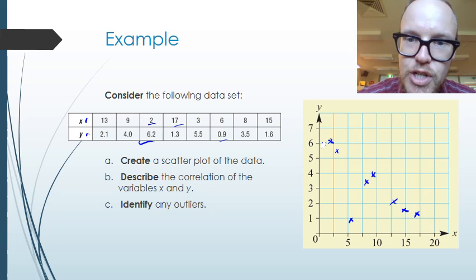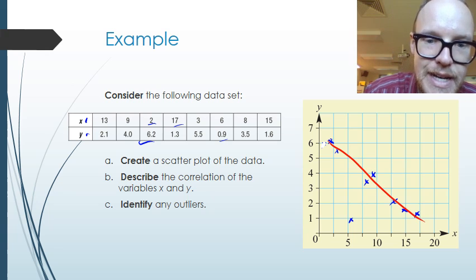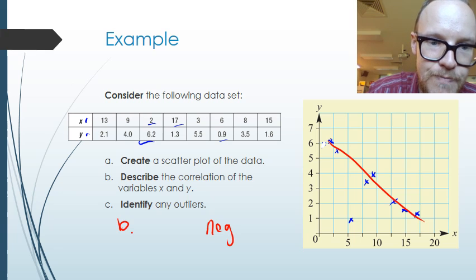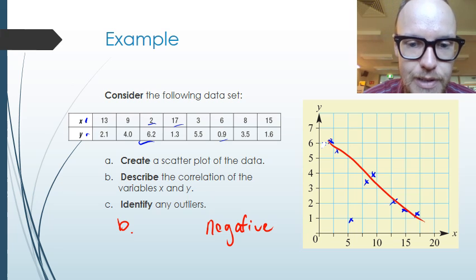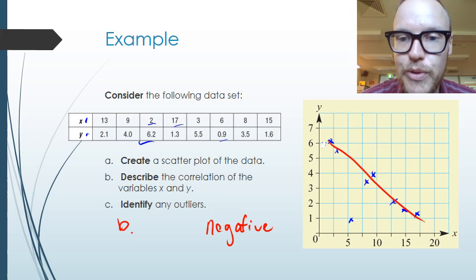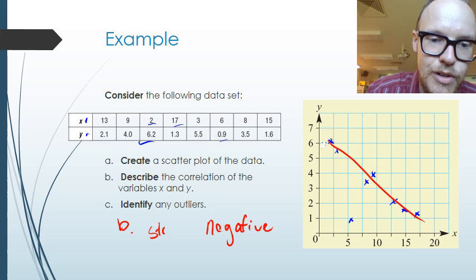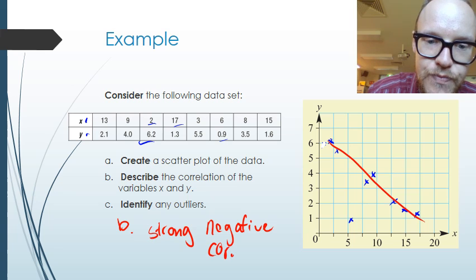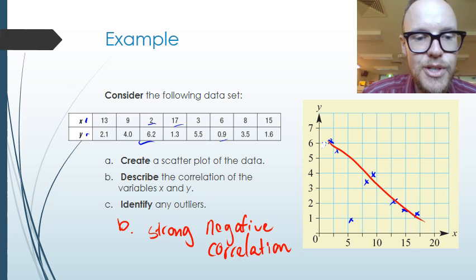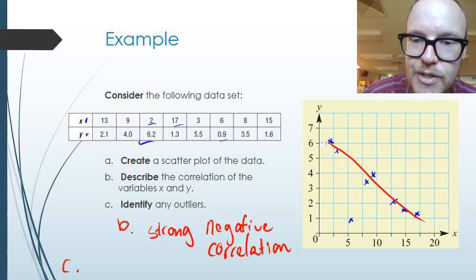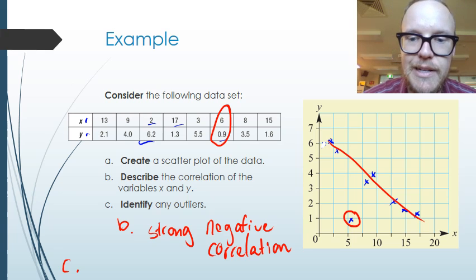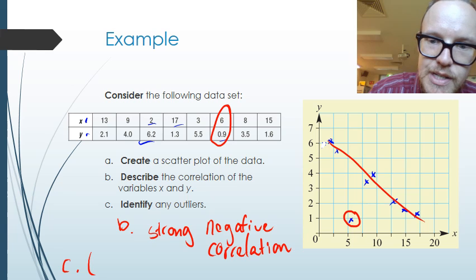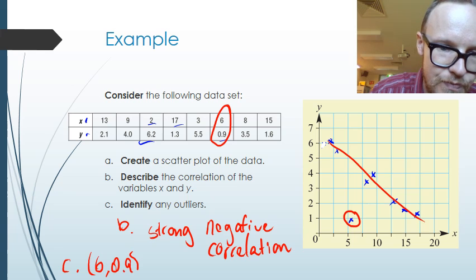We've now plotted our bivariate data points and we can see that the trend is generally decreasing — it's a negative trend. As one variable increases, the other one decreases. For part b, it's a negative trend. The data points are very close together and not very spread out, so I would say it is a strong negative correlation.